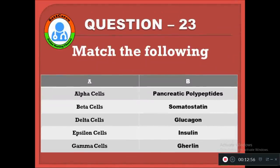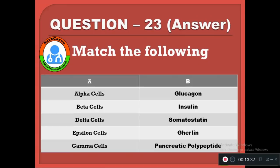Question 23: Match the following pancreatic cells with their secretions. Alpha cells — glucagon; beta cells — insulin; delta cells — somatostatin; epsilon cells — ghrelin; gamma cells — pancreatic polypeptides. The correct matching is: alpha cells secrete glucagon, beta cells secrete insulin, delta cells secrete somatostatin, epsilon cells secrete ghrelin, and gamma cells produce pancreatic polypeptides.